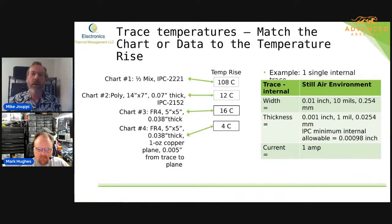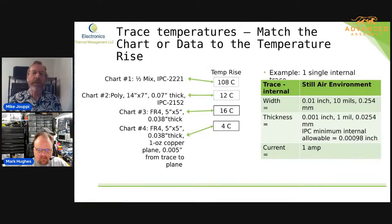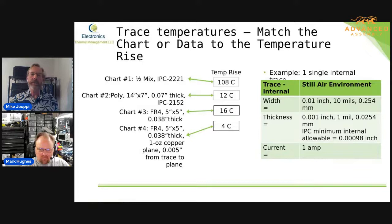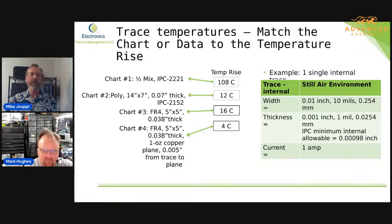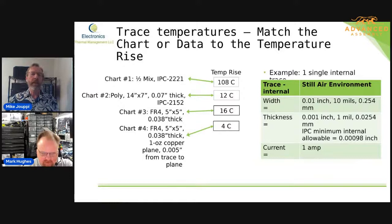What we're looking at here is just a single 10-mil, 1-ounce trace. The trace is set up to run just one amp. So we're looking at the temperature rise of a 10-mil trace, 1-ounce copper. If you were to go to IPC-2221 and look at one amp, what you'd find is that you'd get 108 degrees C temperature rise.